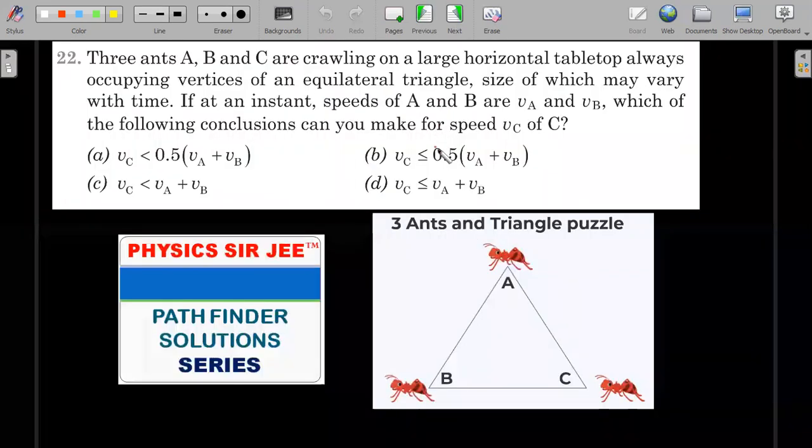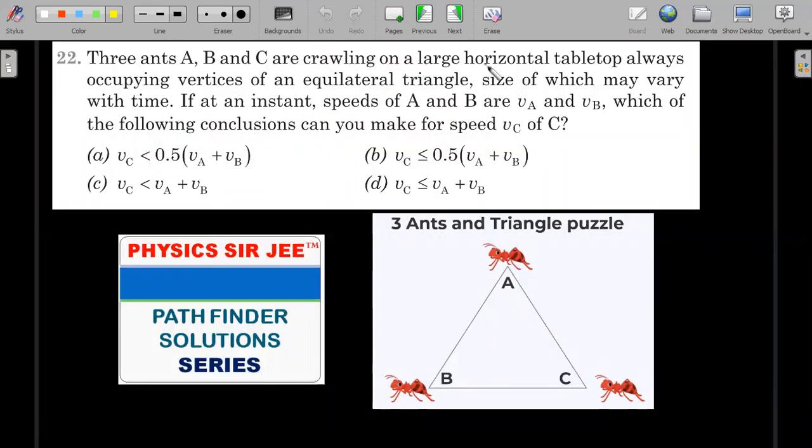Please kindly stay back. Three ants A, B, C are crawling on a large horizontal tabletop, always occupying vertices of an equilateral triangle, the size of which may vary with time. If at an instant, speeds of ants A and B are vA and vB, which of the following conclusions can you make for the speed vC of ant C?